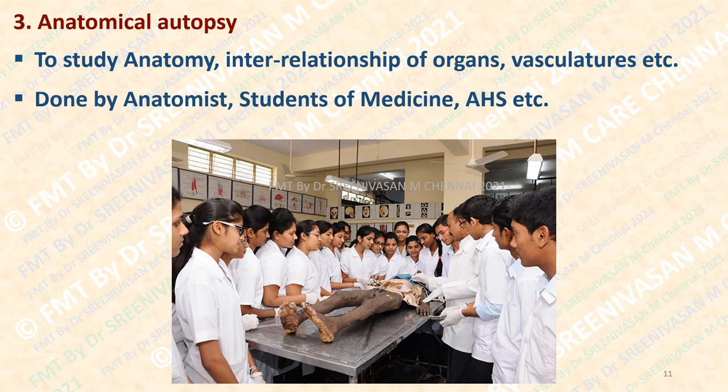The third type is the anatomical autopsy. This is a form of academic autopsy, generally done by anatomists and students of medicine and allied health sciences for the purpose of understanding human anatomy. No legal issues are involved. If a person has voluntarily donated his body for anatomical purposes after death, then only with the consent of the next of kin should the anatomical autopsy be done. If the relatives object to handing over the body to academic institutions, even though the deceased expressed his willingness while alive, if the relatives refuse it should not be performed.